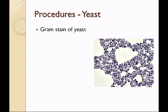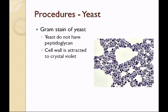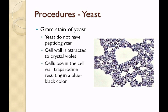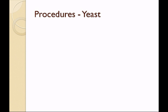For the yeast, you are going to do a gram stain — one per table will be fine. Remember yeast are eukaryotes. They don't have peptidoglycan, but when we prepare a gram stain in the laboratory we might see yeast, so it's always good to know what they look like. The cell wall is attracted to crystal violet — the cell wall is negatively charged in yeast. Cellulose in the cell wall will trap iodine, so the yeast often look more of a blue-black color rather than purple. These organisms are not gram positive because they are not bacteria — they just stain this blue-black color in the gram stain.